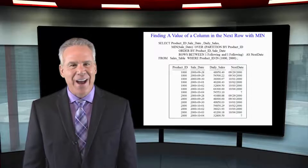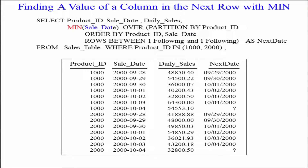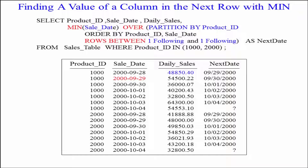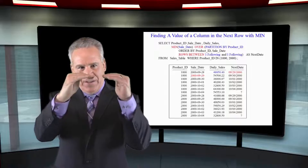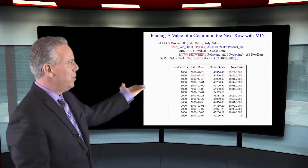Take a look at this. We're going to look at the MIN of sale date, and we're again partitioning by product ID, ordering by product ID and sale date, with ROWS BETWEEN 1 FOLLOWING AND 1 FOLLOWING. After sorting and partitioning, on day one we made 48,850.40 — what was the next date we had a sale? It will tell you the next date. Imagine you're in a retail business and you sold some large product for $10 million — when's the next time you're going to sell one of those? A week from now. That's the idea behind this query.